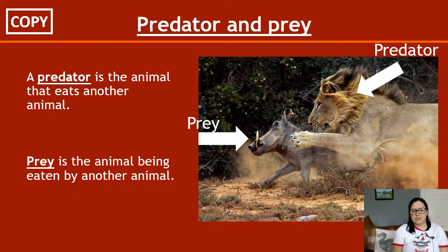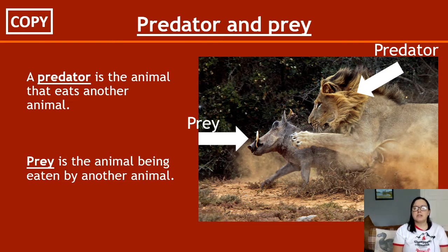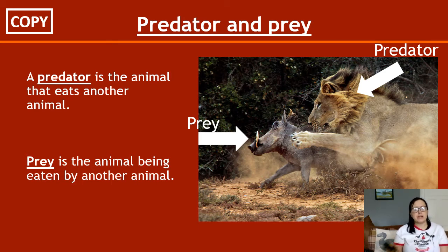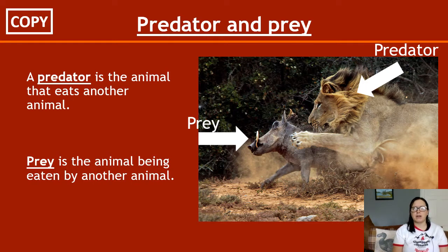A predator is the animal that eats the other animal; prey is the thing that's going to get eaten. Some species are both predator and prey — for example, small birds can be predators because they predate on insects, which are other animals, but they can also be prey to bigger birds. You might need to identify that from a food chain: it's got a predator, but it also predates on something, so it's both.